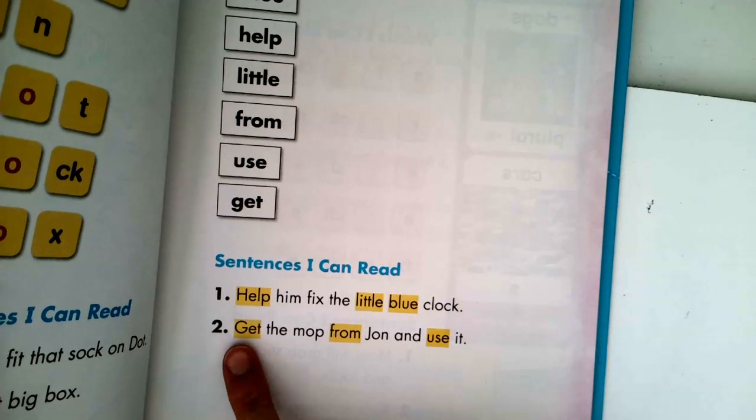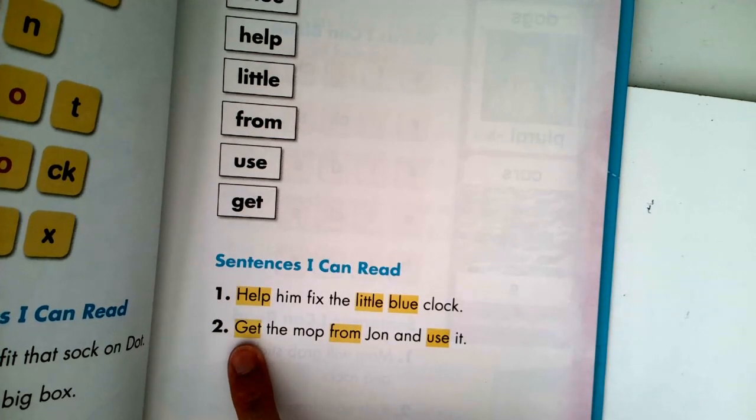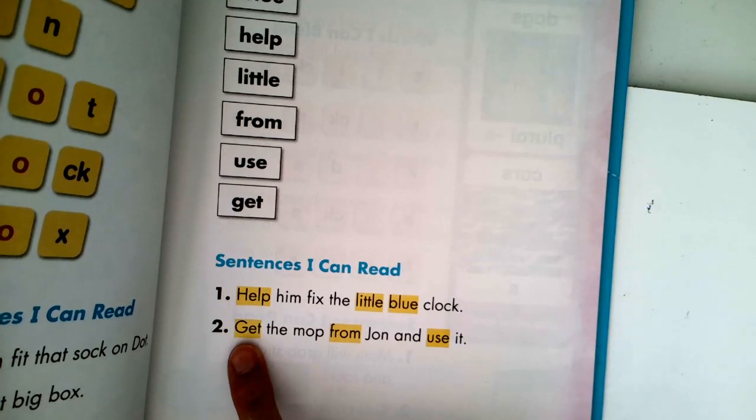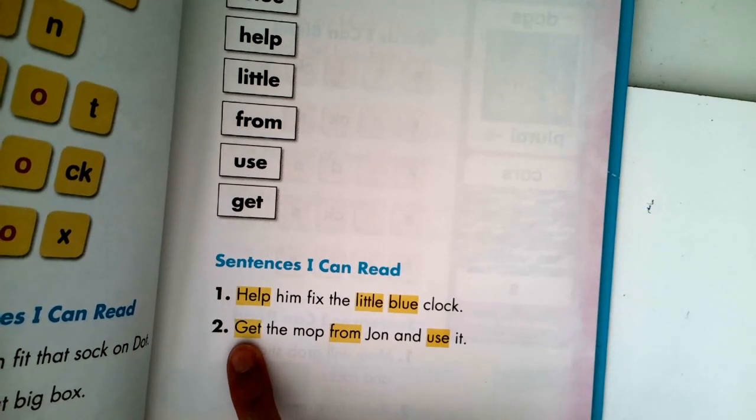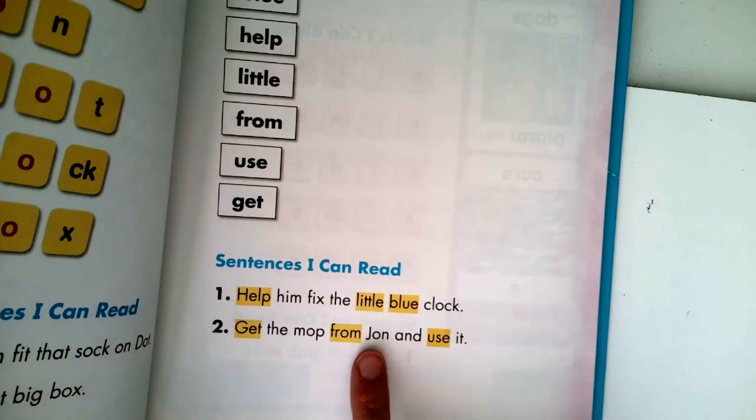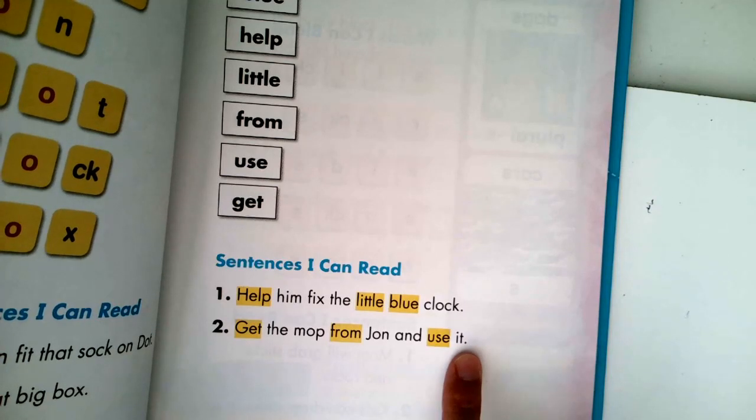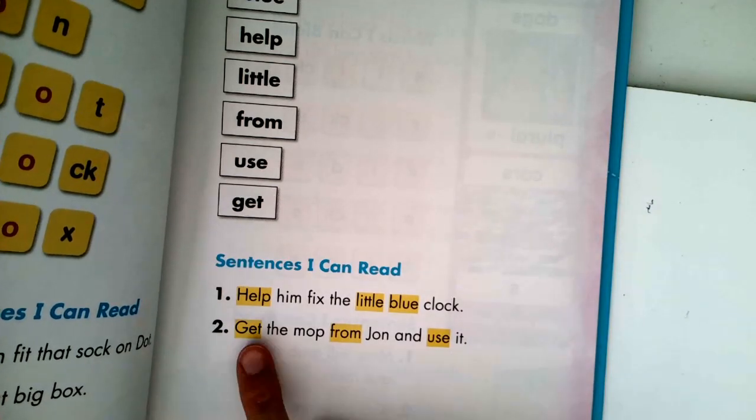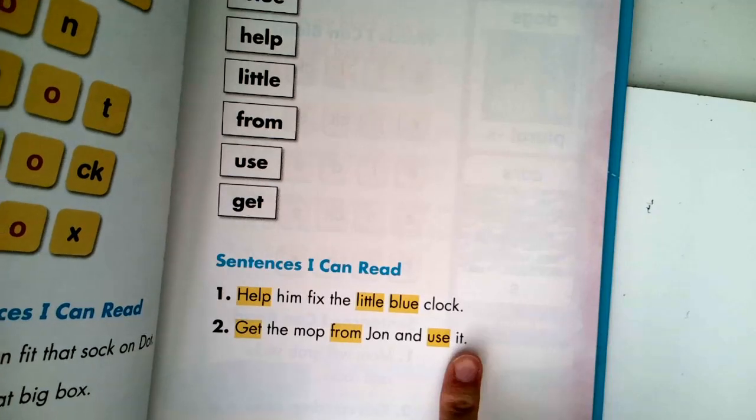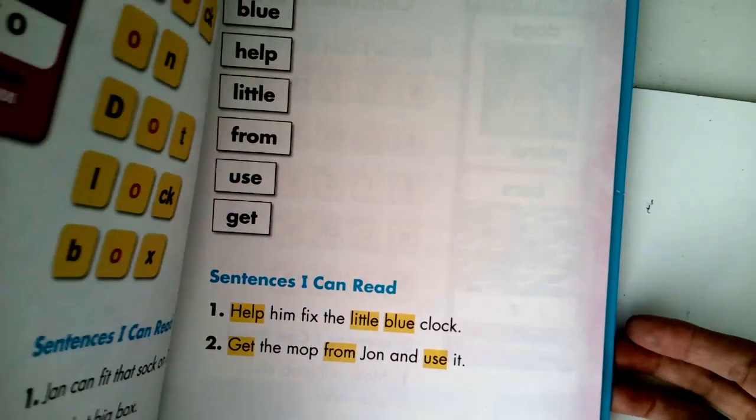Alright, let's do sentence number two. Whisper read it to yourself to find the words that you might need to work out. Let's read it together. Get the mop from John and use it. Alright, let's do it again. Get the mop from John and use it. Awesome work, first graders. Alright, go ahead and you can close your book. You will have an activity to keep practicing those sight words today on Seesaw. It's a pretty fun one, so I hope you enjoy it.